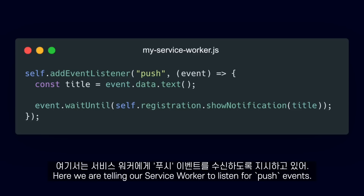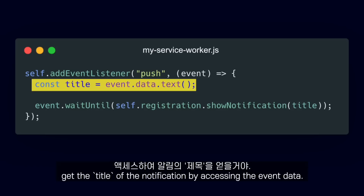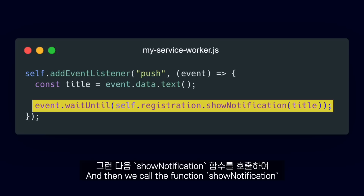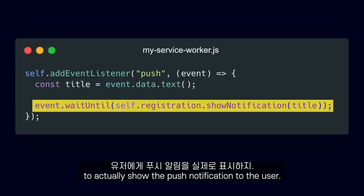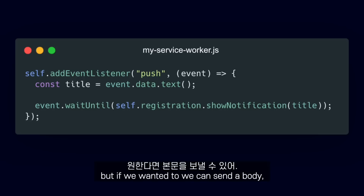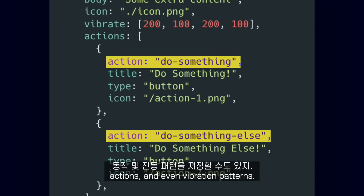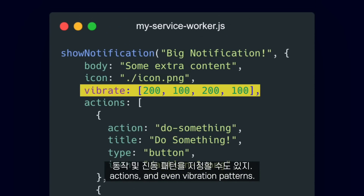Here we are telling our service worker to listen for push events. When a push event happens, we want to get the title of the notification by accessing the event data, and then we call the function showNotification to actually show the push notification to the user. In our code, we are only sending the title of the notification. But if we wanted to, we can send a body for more extra content, specify icons, actions, and even vibration patterns.